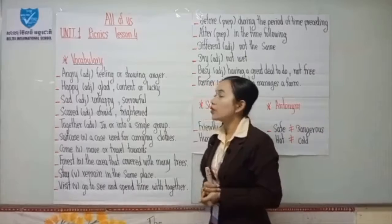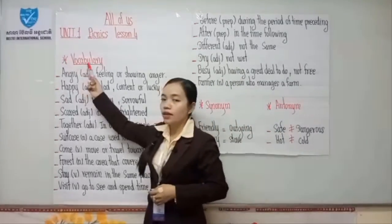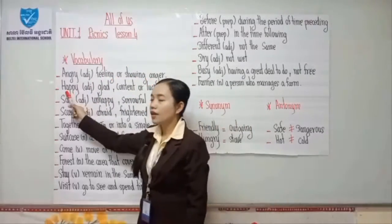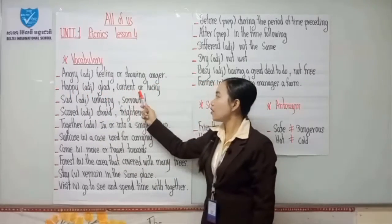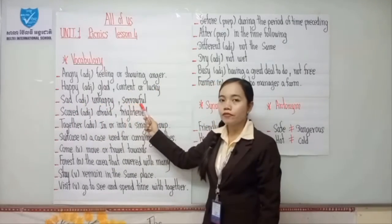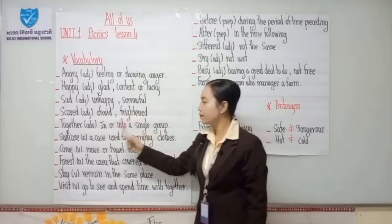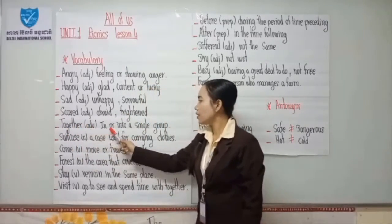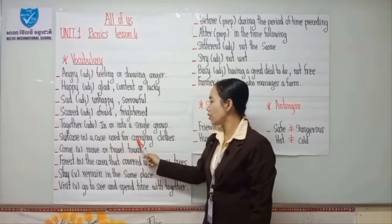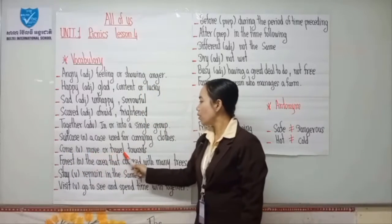So now let's continue to our vocabulary together. Vocabulary: angry — attitude, feeling, or solving anger. Happy — attitude, glad, content, or lucky. Sad — attitude, unhappy, or sorrowful. Scared — attitude, afraid, frightened. Together — adverb, in or into a single group. Suitcase — noun, a case used for carrying clothes. Come — verb, move or travel.